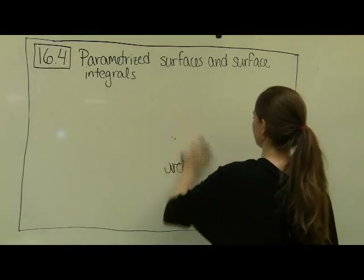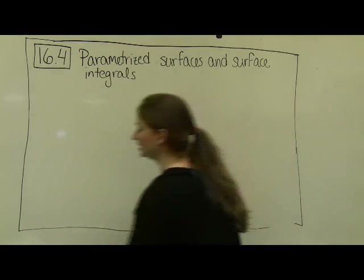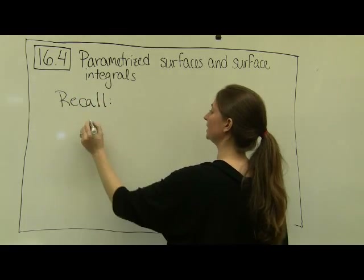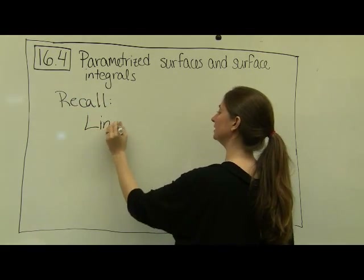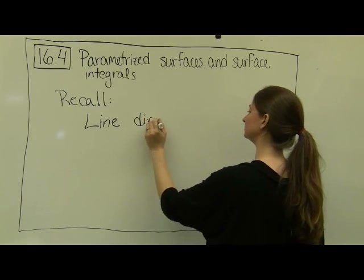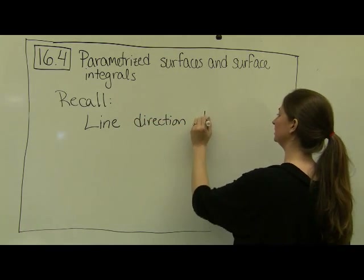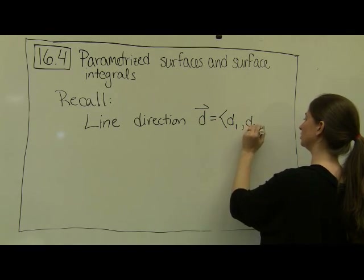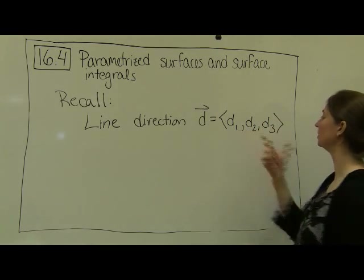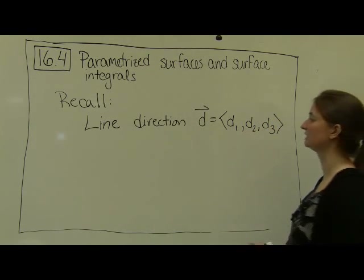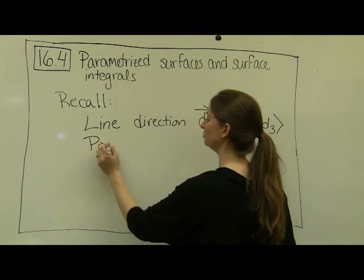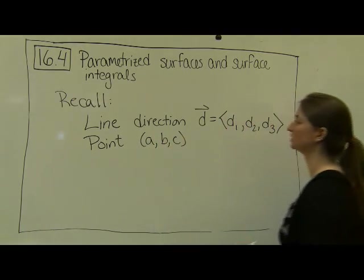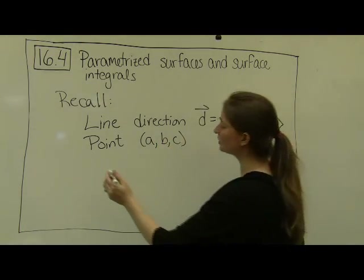Let's start with a review. We've seen parametric equations before in the context of a line. A line has a direction, which I'll call d, and that's a three-component vector d1, d2, d3. The line also passes through some point, which we'll call a, b, c.